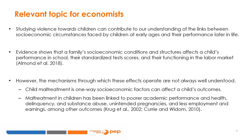We start by discussing why studying violence towards children in its multiple forms is relevant for economists. Understanding its causes and consequences can contribute to our understanding of links between socioeconomic circumstances faced by children in early ages and their performance later in life. There is plenty of evidence linking socioeconomic conditions and family structure during early childhood to school performance, standardized test scores, labor market outcomes, and many other outcomes — see Almond et al., 2018. The mechanisms through which these effects operate are not always well understood, and child maltreatment is one possible way in which socioeconomic factors may affect children's outcomes.